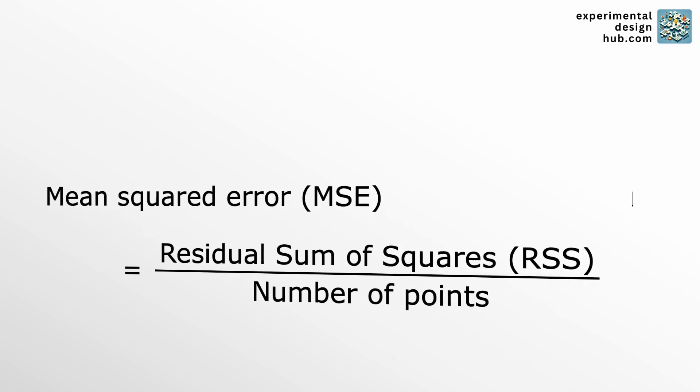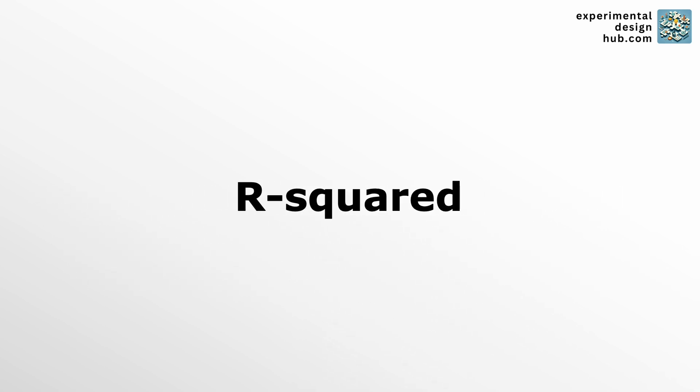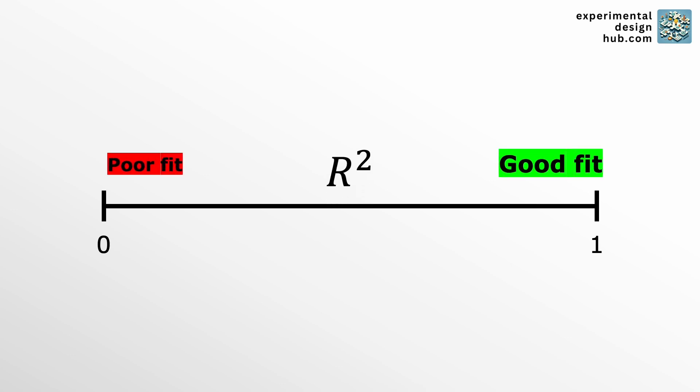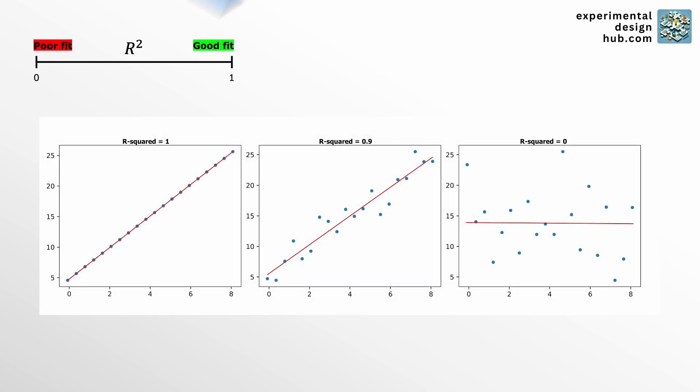This is where R squared comes in handy. You've probably seen R squared before if you've ever used Microsoft Excel. It's standardized and ranges between 0 and 1, making it much easier to interpret. Essentially, it tells you how much of the variation in your response can be explained by the model. An R squared of 1 means that your model is spot on and it explains 100% of the variance within your data.